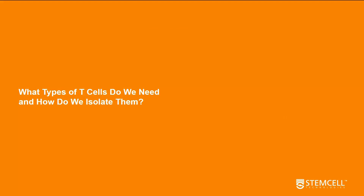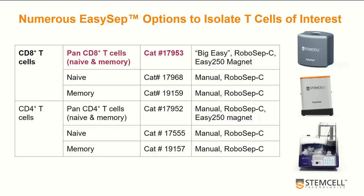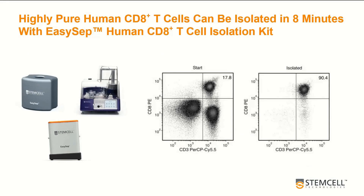Now we will turn our attention to isolating T-cells for co-culture work. Stem Cell Technologies has numerous options for isolating T-cells, including memory CD8 or CD4 T-cells from PBMCs, available on numerous cell isolation platforms. For today's discussion, we will focus on the EasySep human CD8 T-cell isolation kit, which can isolate highly pure label-free CD8-positive T-cells in 8 minutes. The flow plot on the left represents our starting PBMC population, while the plot on the right demonstrates a highly pure CD8-positive CD3-positive cell population after isolation.